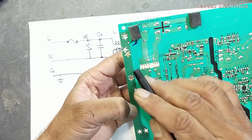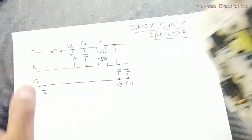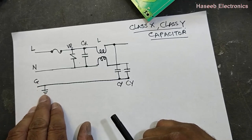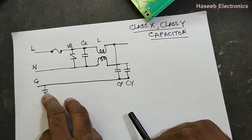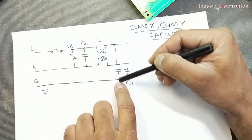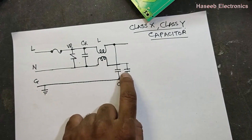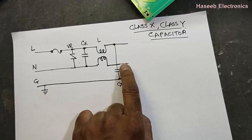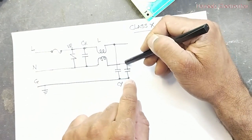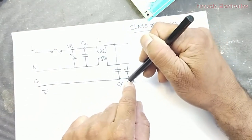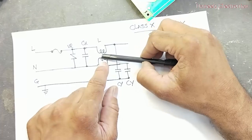In a three-wire system, these capacitors are connected to ground. So our line is connected to ground through this capacitor. Class Y capacitors are connected between line and ground, and neutral and ground. The X capacitor is connected between line and neutral, and here we have the inductor.